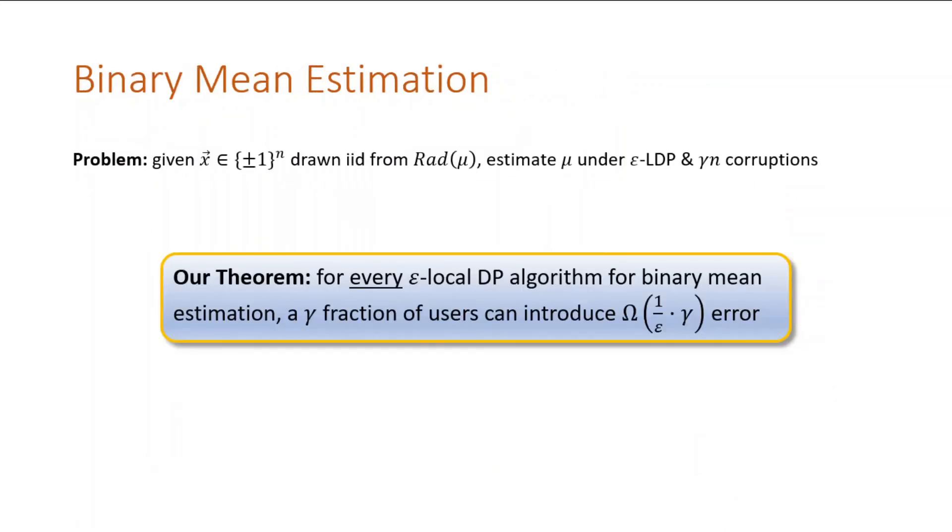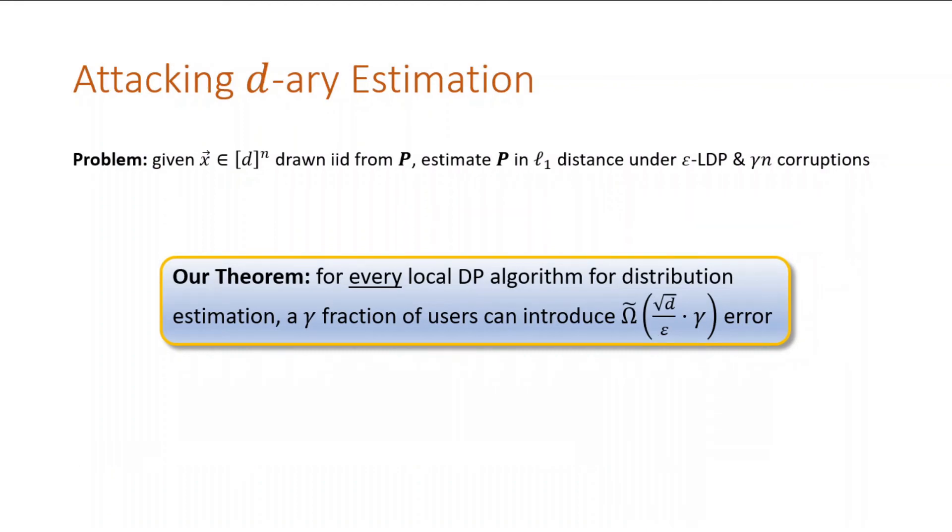So we have shown that every locally private protocol has manipulation error gamma over epsilon in the binary case. Randomized response gives a matching upper bound to this result. When the dimensionality is d, we want to show that the error now scales with root d. So there is no useful estimation if an epsilon over root d fraction is corrupted. As with the binary case, the lower bound is tight. There is a protocol whose error is at most root d over epsilon.